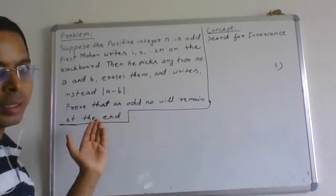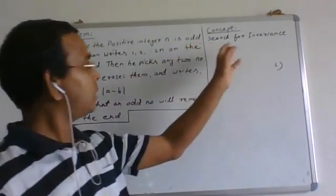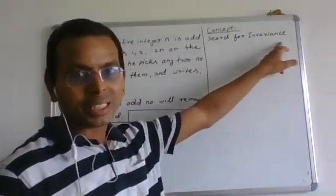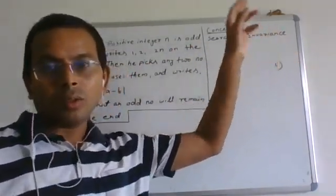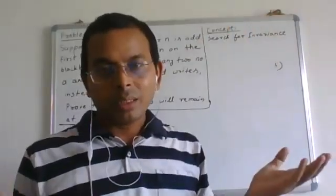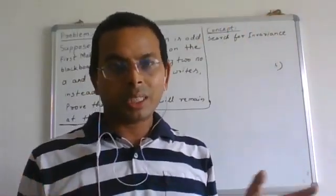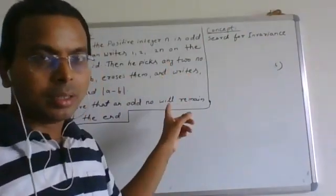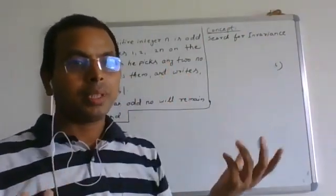Then prove that an odd number will be remaining at the end. So how to solve this? Here the concept is search for invariance. What stays the same? What remains invariant? We need to search in this question. Then it will be very easy solution.